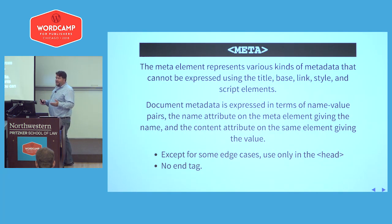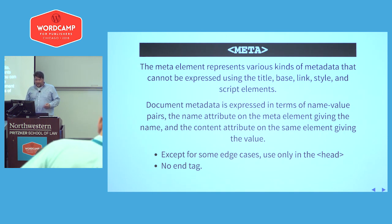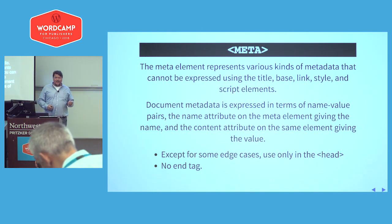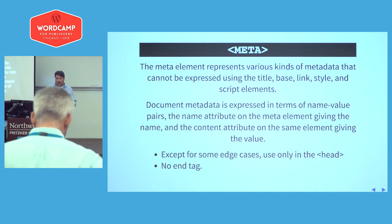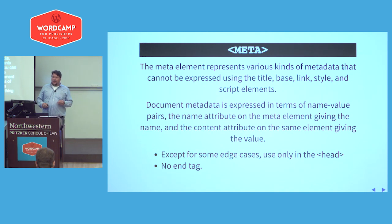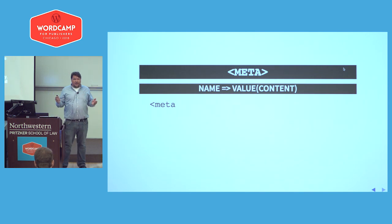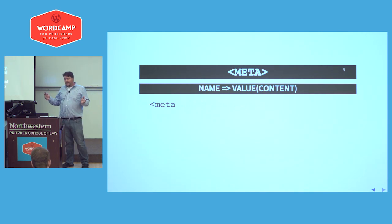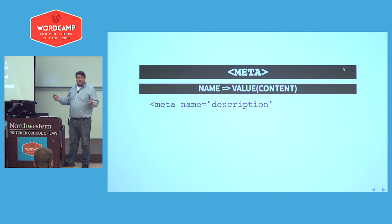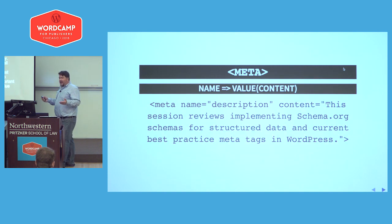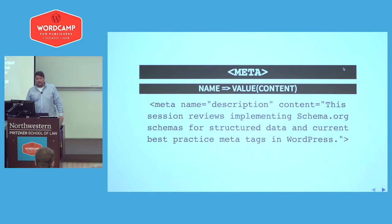The meta element represents various kinds of metadata that cannot be expressed as the other elements. Metadata is expressed in terms of name-value pairs. Most of the time it can only be used in the head, and it's just a single tag with no end tag. The most important concept is that name-value pair: the meta tag opens, you give it a name — in this case 'description' — and then the value is the content, which is the meta description on the page.